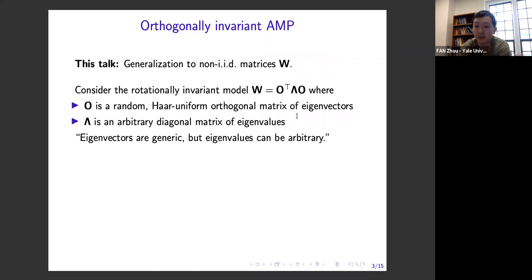Specifically, the model I want to consider is a rotationally invariant model. What I mean by this is that if I write down the eigendecomposition of W as O^T lambda O, I'll assume that the orthogonal basis of eigenvectors of W is Haar-uniform and random — completely uniformly random on the orthogonal group — but lambda can essentially be an arbitrary diagonal matrix of eigenvalues. Informally, I require my eigenvectors to be generic, but the eigenvalues can be essentially arbitrary.